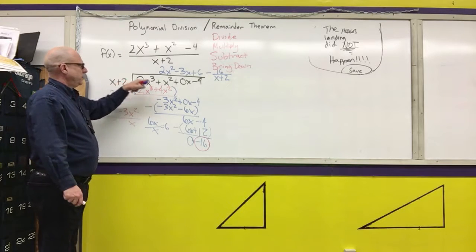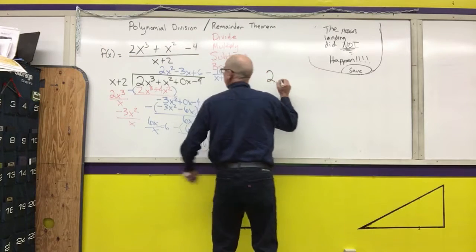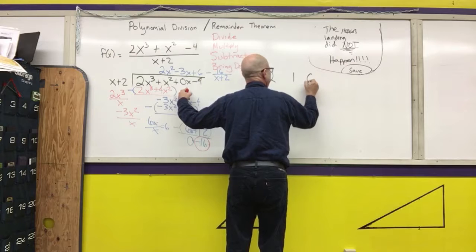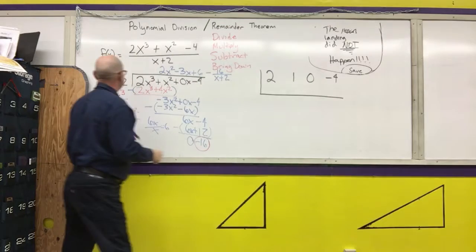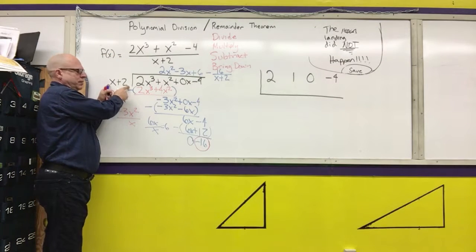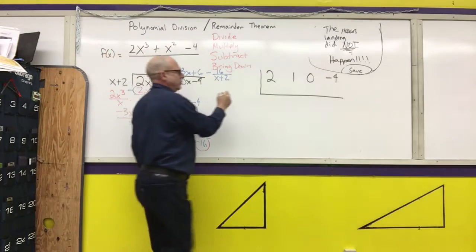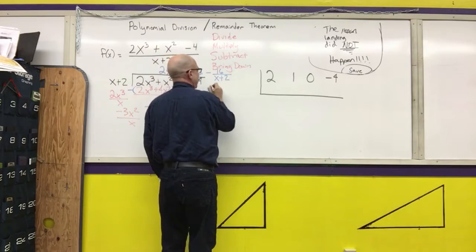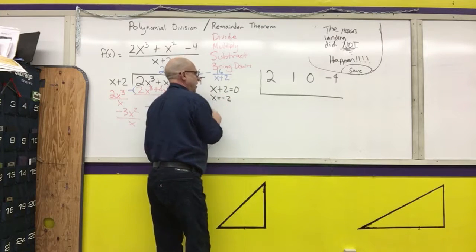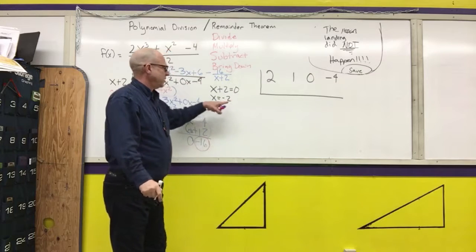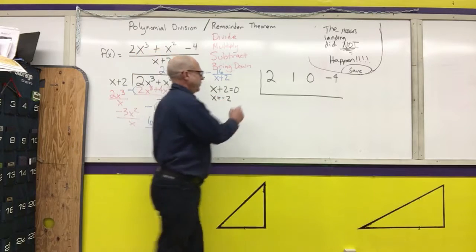From the last video, I'm going to write the coefficients down in order: 2, 1, 0, and negative 4. When you are doing synthetic division and dividing by x plus 2, you need to find the zero of the factor. If x plus 2 equals 0, then x equals negative 2. Remember, synthetic substitution says: when I substitute this number for x, what do I get for y? That's what we're going to do — we want to substitute that number in for x.